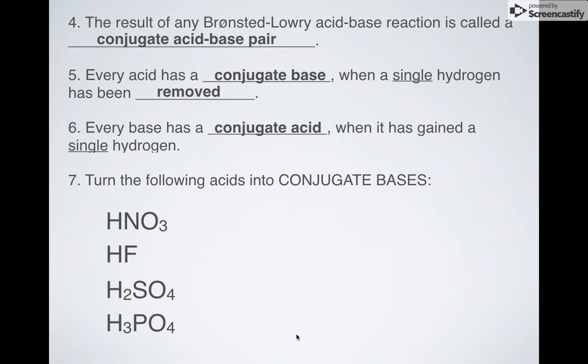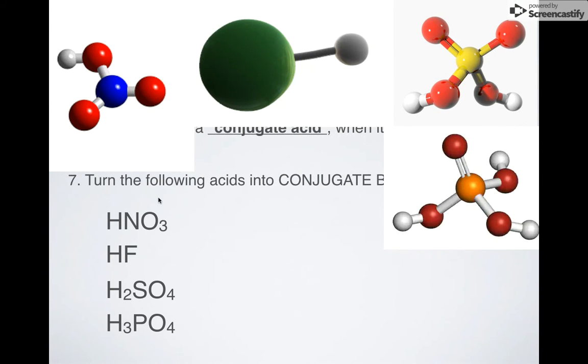So let's try to turn some acids into conjugate bases. These acids can be turned into conjugate bases by removing hydrogens. So hydrogens are these white things right here. And I can only remove a single one. What happens when I remove an H from HNO3? What am I left with? NO3-. Why the minus? Remember, I'm not just removing a hydrogen. I'm removing a hydrogen ion. Hydrogen ions are positive things.